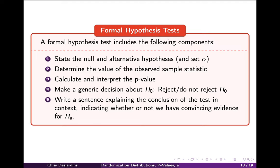Putting everything together, we arrive at formal hypothesis testing, which involves: stating a null and alternative hypothesis, setting the significance level alpha, calculating the sample statistic of interest, calculating a p-value with a randomization distribution, interpreting that p-value, making a decision about the null hypothesis, and writing a conclusion in the context of the research question.